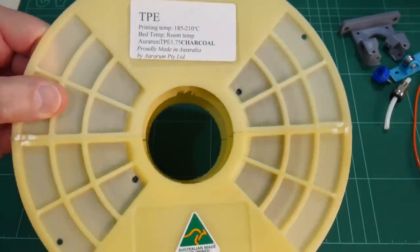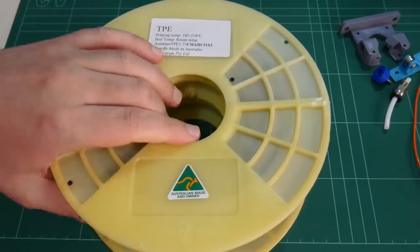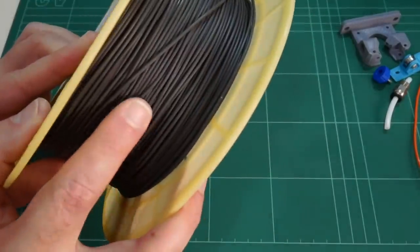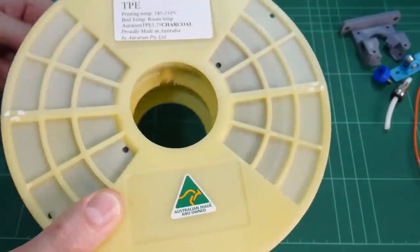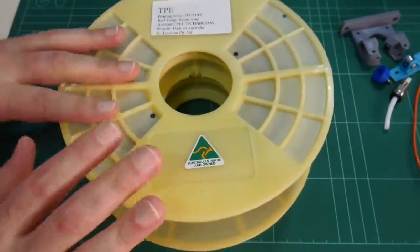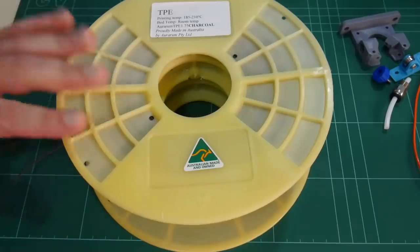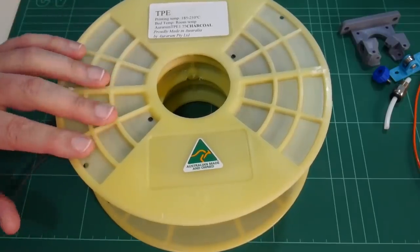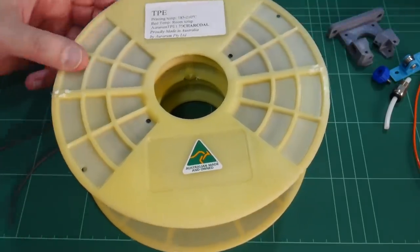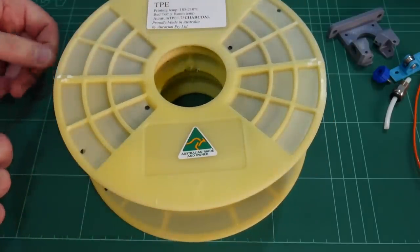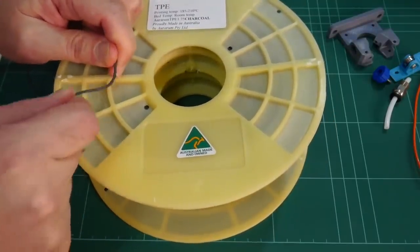I've had this spool of TPE filament provided from Aruram for quite a while now, but I haven't been able to print with this because my other extruder simply wasn't able to push this through the Teflon tube without binding. So finally, the big test is this new Bowden system, worthy of printing this ultra flexible TPE filament.